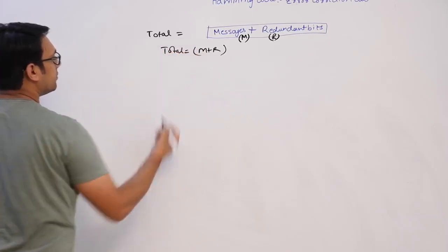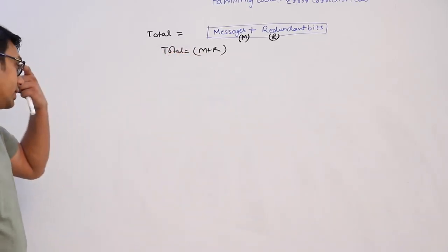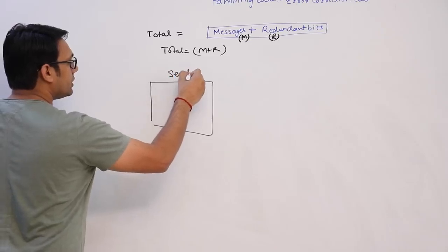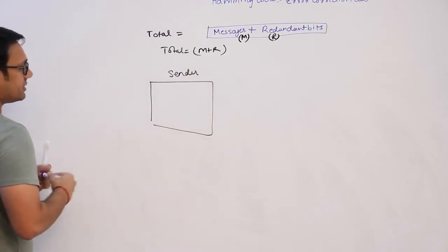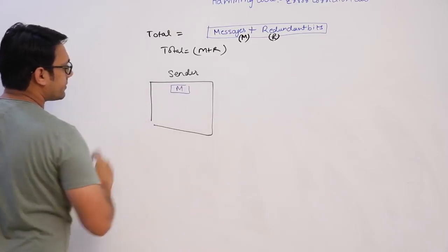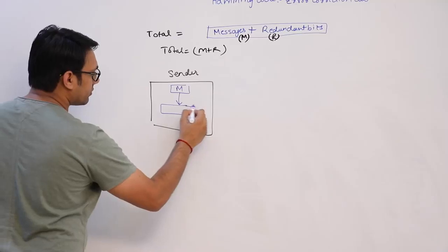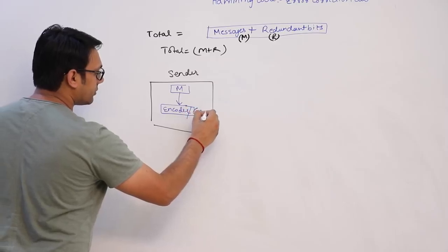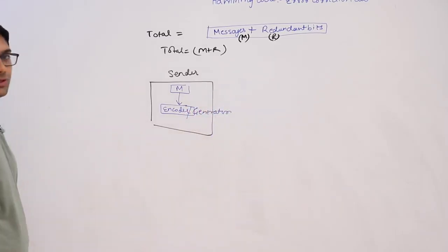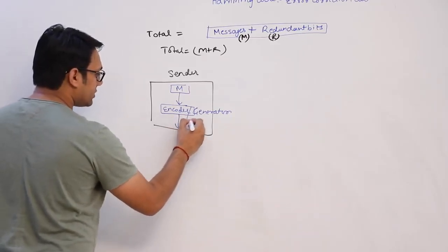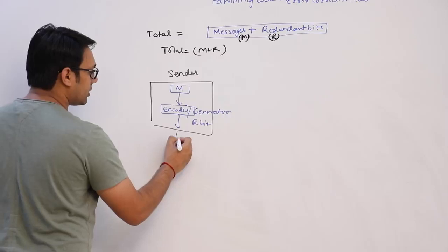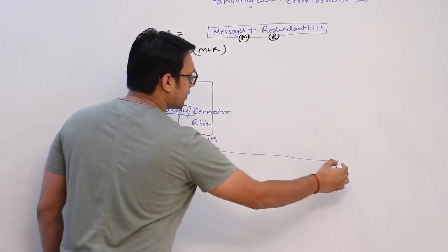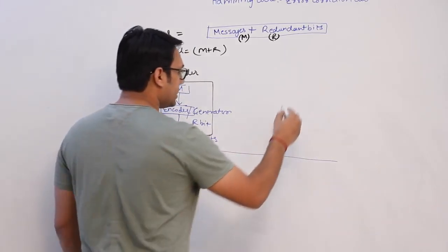The sender will create a data message m of some bits, and pass it to something called a generator. This generator will generate r bits of information, which are added to the m message bits, resulting in m plus r bits of information. This complete m plus r bit message is then transmitted to the receiver.